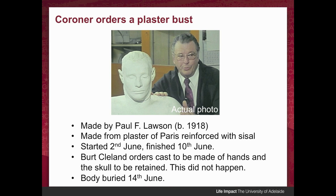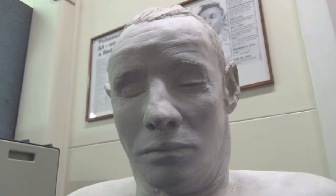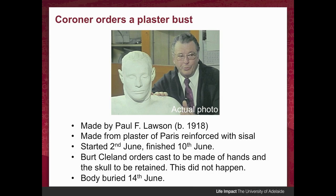The next part of the story is that the body was now six months old and one of the toes was starting to deteriorate even in the mortuary fridge. So they decided it was time to start thinking about burying the body, but to preserve some of the features they wanted a plaster bust made. They appointed Paul Lawson to make a plaster cast directly off the dead body to preserve the man's features. Paul started this on the 2nd of June and finished on the 10th. Cleland also ordered a cast of the hands and wanted the skull removed for further identification, but those two orders never happened and the body was buried in a rush on the 14th of June.